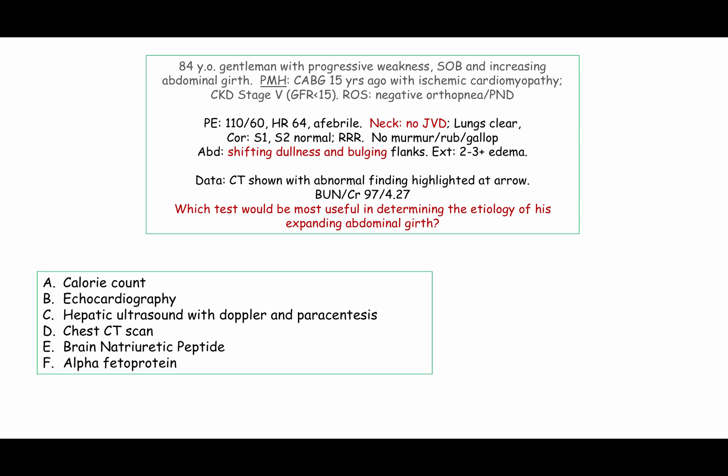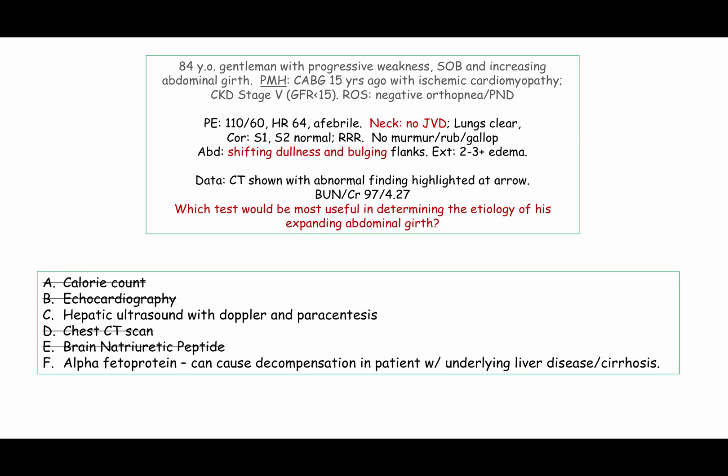Moving along to the second question, the patient still has ascites but now there is no JVD. In this instance, they are just asking us to identify the cause of the ascites. In the presence of ascites and in the absence of JVD, we can exclude several options — namely all cardiac causes.